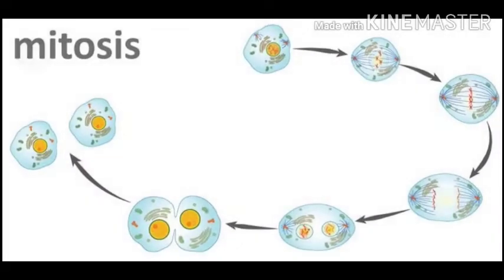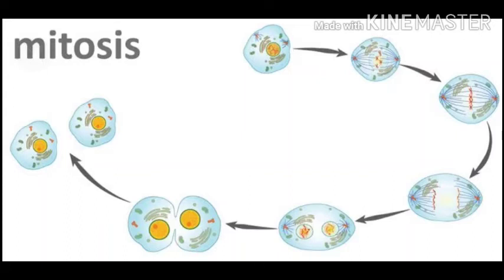Now let us discuss the steps involved in observing the different stages of mitosis in an onion root tip. The aim of the experiment is to observe the different stages of mitosis in an onion root tip.